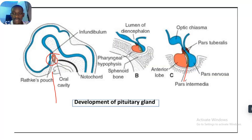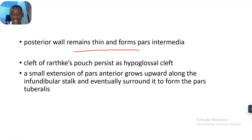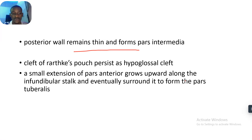The cleft of Rathke's pouch persists as the hypophyseal cleft. A small extension of the pars anterior grows upward along the infundibular stalk and eventually surrounds it to form the pars tuberalis.